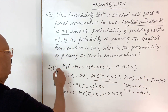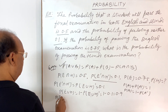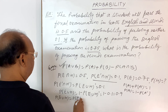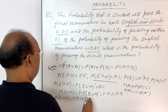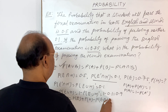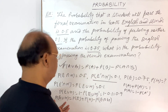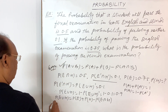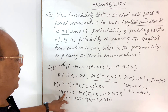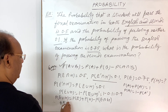Now, using the union formula, we can write: probability of E union H equals probability of E plus probability of H minus probability of E intersection H. We have just evaluated that P(E union H) is 0.9.